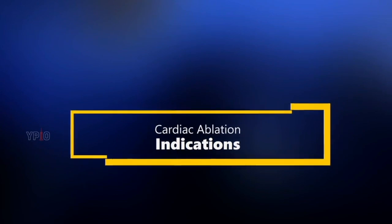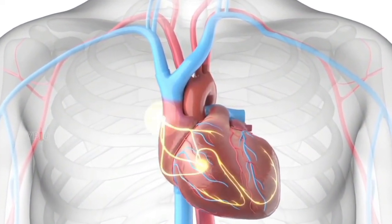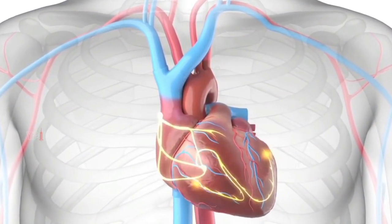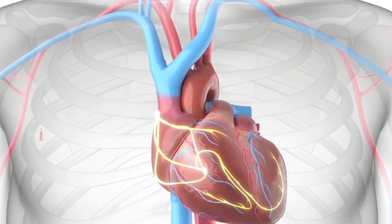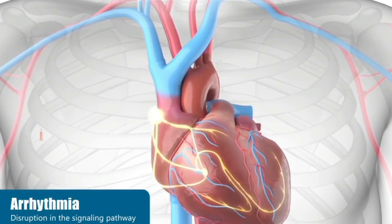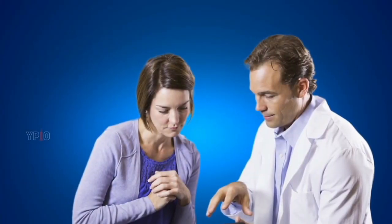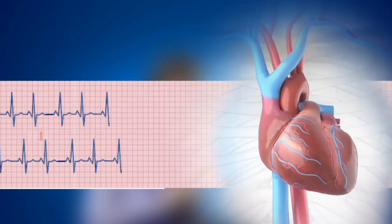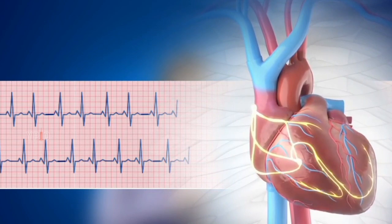When the heart beats, the electrical signals that prompt your heart to contract or squeeze should follow a specific pathway through the heart. Any disruption in the signaling pathway can cause an arrhythmia. Your physician may recommend cardiac ablation for the correction of heart rhythm issues and to alleviate associated symptoms.